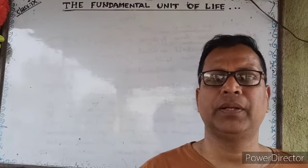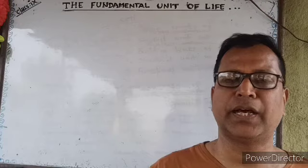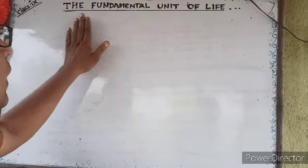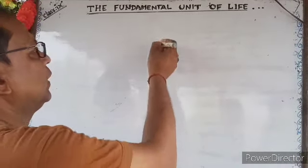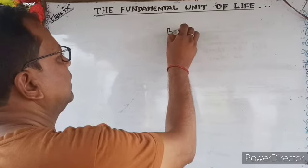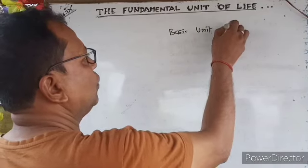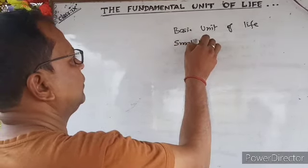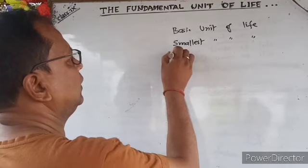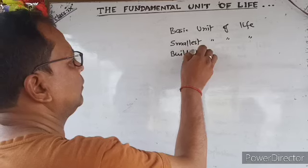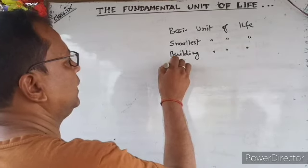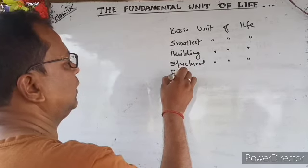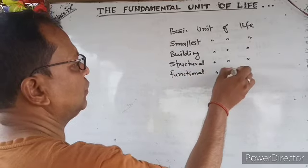Today the chapter is the fundamental unit of life — Class 9, first chapter of biology. The fundamental unit of life may also be called the basic unit of life, the smallest unit of life, the building unit of life, the structural unit of life, and the functional unit of life.